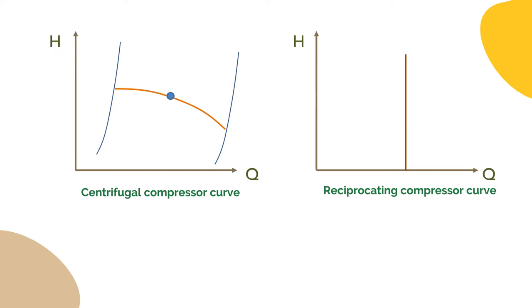For a reciprocating compressor, it shall give a constant volume, so we shall have a constant volumetric flow rate, but differential head can be varied depending on the system resistance.